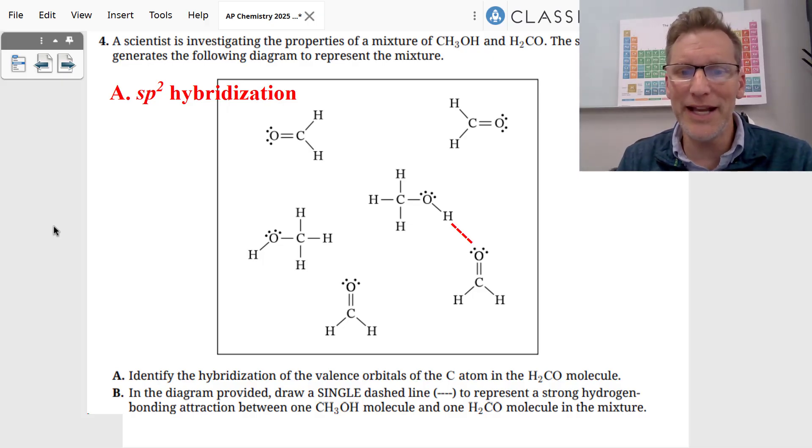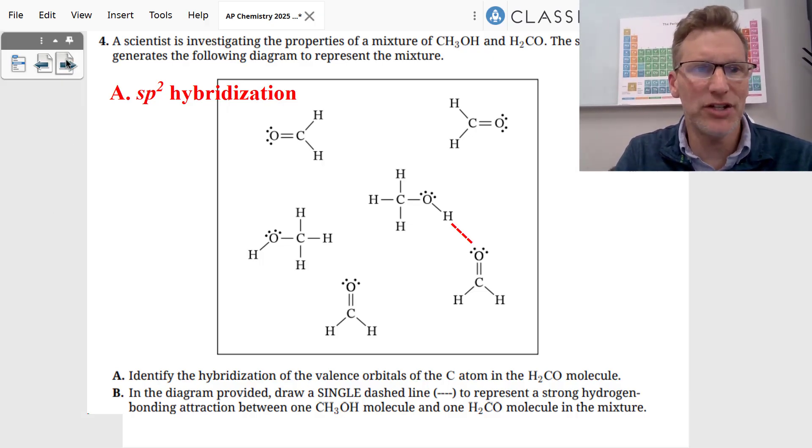And then they wanted a single dashed line to represent the strong hydrogen bonding attraction. You have to take a look at the CH3OH, and you're looking at that H attracted to the O of the H2CO molecule there. And you can see where that hydrogen bond is with that dashed line.